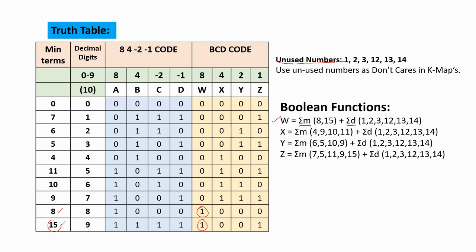The largest number is 15, whose binary form is 1111. With 4 bits, we have 2^4 = 16 total combinations. The unused numbers are the missing min terms. The available numbers are 0 through 11 and 12 through 15. Whatever numbers are missing are the unused numbers, and those unused numbers are used as don't care values. We use these don't care values to simplify the boolean functions in K-maps. For Z, the 1s are in 5 positions, with corresponding min terms 7, 5, 11, 9, 15, plus don't cares.